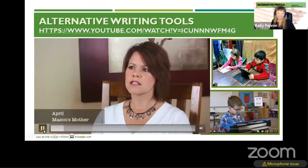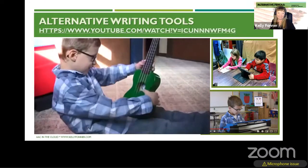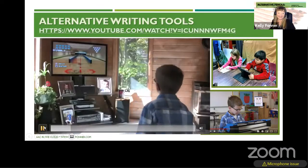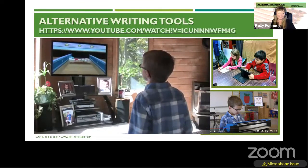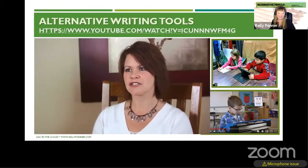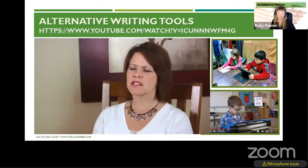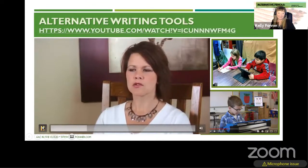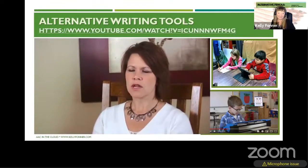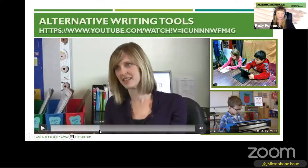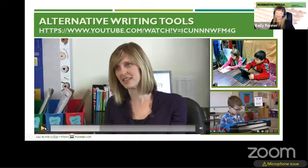Mason is six years old. He enjoys music — this instrument is called the ukulele. He also enjoys playing the Wii — he loves bowling, tennis, and Just Dance, even though it's hard for him to follow along with the movements. Mason is visually impaired — he's blind in his left eye, and in his right eye he has a partial retina giving him about 20/300 vision compared to the normal 20/20. We're going to fast-forward to where Mason is using his Mount Batten brailler.